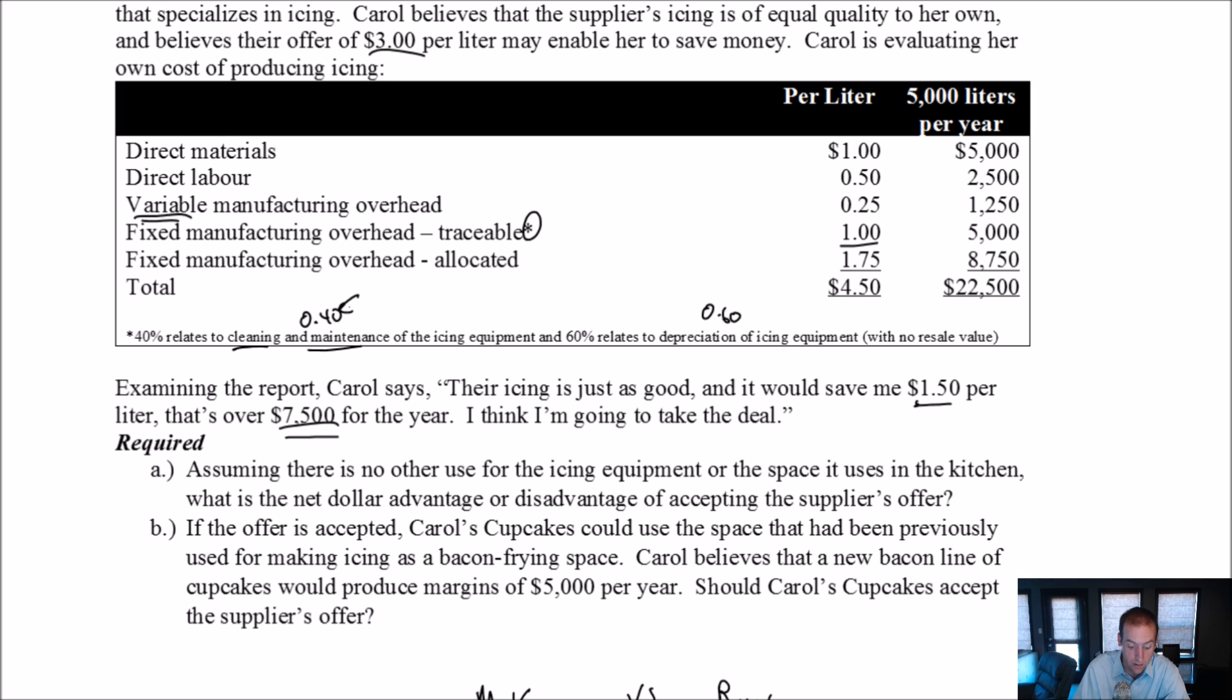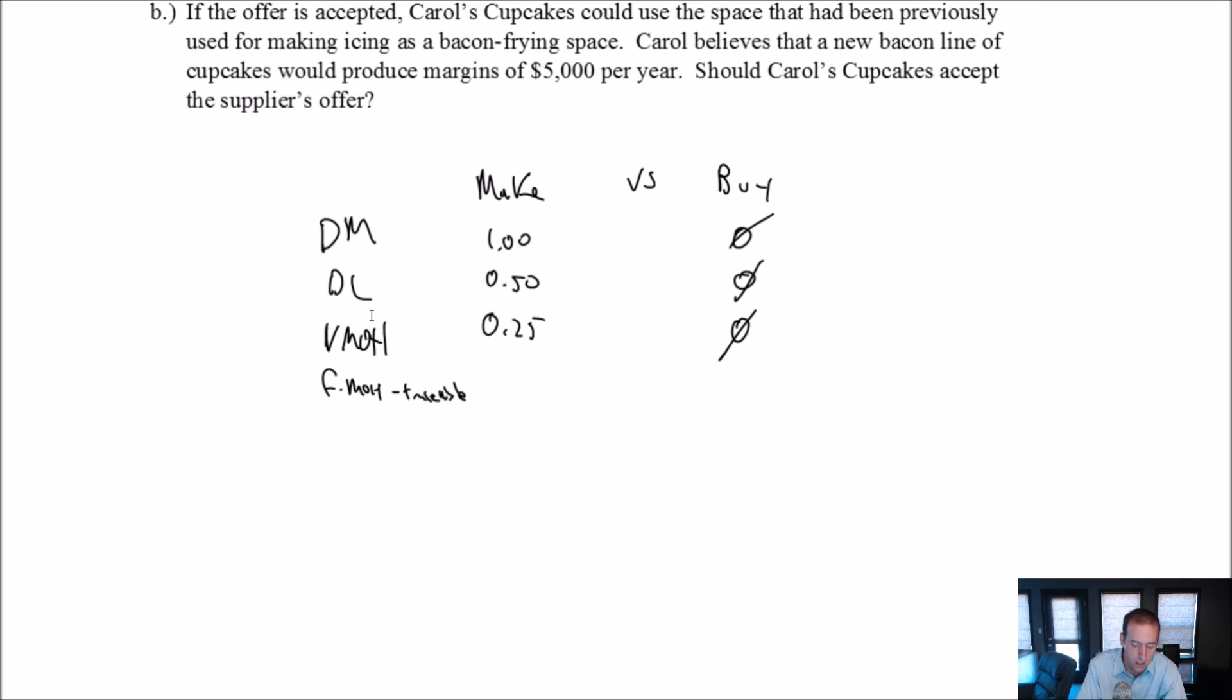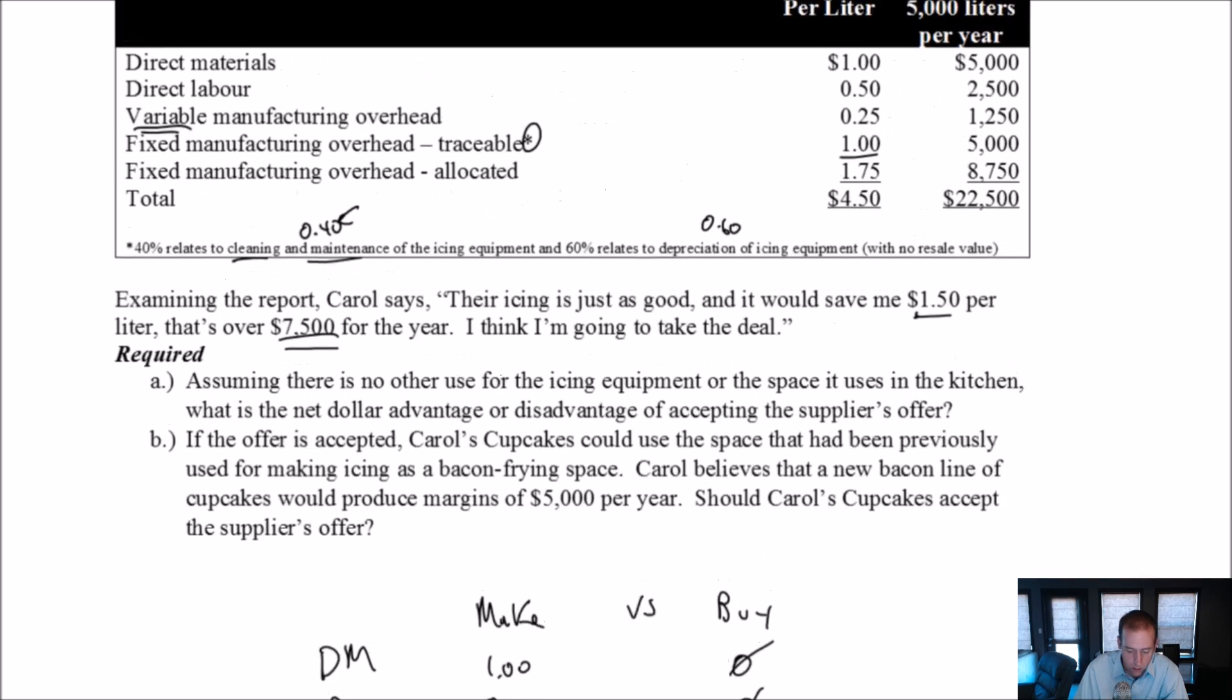Well, let's start with the cleaning and maintenance of icing equipment. If I continue to make icing in house, if I continue to make icing, I'm going to have to keep cleaning and maintaining my icing equipment. I'm going to have to keep paying 40 cents per liter of icing. So absolutely. This is relevant because again, that's different between the alternatives. If I buy my icing externally, I don't have to clean and maintain my icing equipment because I'm not going to need any icing equipment. If I make it, then yeah. So it's different between the alternatives. It's not sunk yet. Like I haven't made my next batch of icing yet. And when I make it, I'm going to have to clean and maintain the icing equipment. So it's not sunk. It's different. It is relevant. So that 40 cents is relevant.